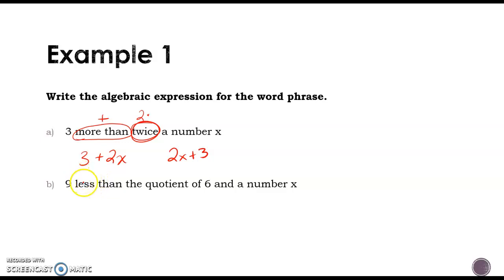Our next one, we have nine less than the quotient of six and a number x. So this less than, this is where we have to do that flip-flop. So I know I'm doing minus nine, and we're subtracting that from the quotient of six and x. So quotient means divide, so we're going to take six divided by x, six divided by x. Now you could also do six divided by x, I would put that in parentheses minus nine, but either one of those, they are the same thing, because those are the two ways we can write division.